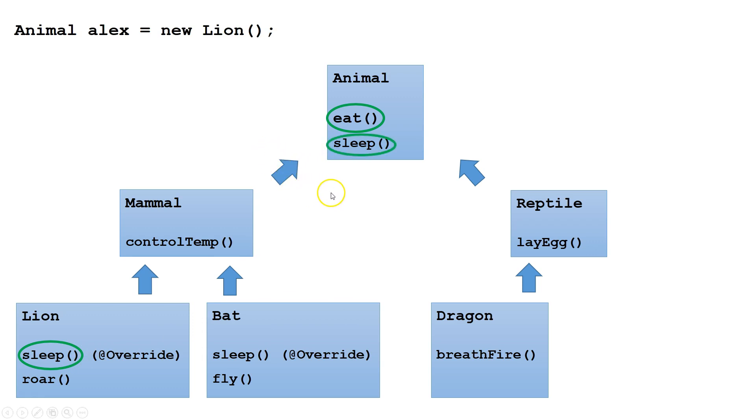If we use the super keyword, we might even be able to access the original version of the sleep method from Animal. To learn more about the super keyword, click on the link in the upper right-hand corner of the screen.